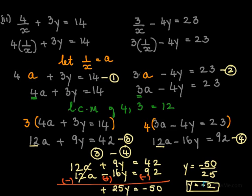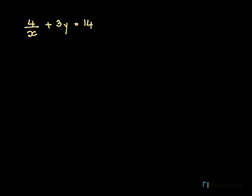Now this y equal to minus 2 we substitute in any one equation. Maybe we will substitute in this equation and find the value of x. So we go ahead. This was our first equation given to us. 4 by x, and we have found out the value of y is minus 2. So we put y equal to minus 2, equal to 14. And we go ahead and solve it.